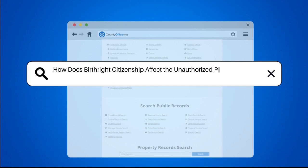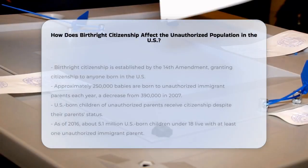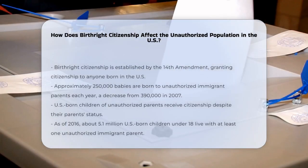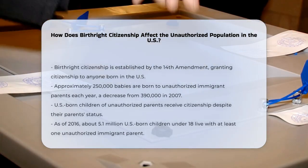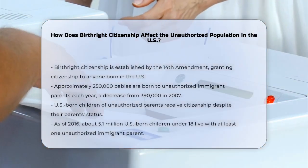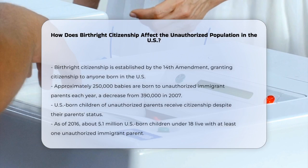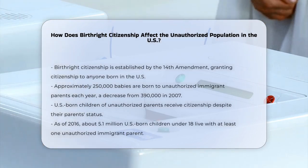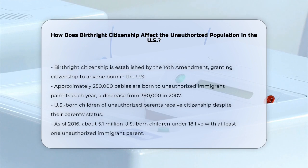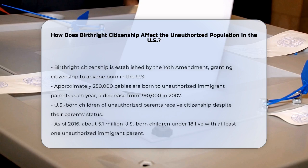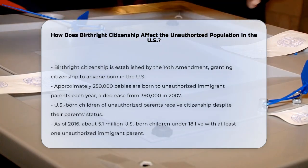How does birthright citizenship affect the unauthorized population in the U.S.? Birthright citizenship, granted by the 14th Amendment to the U.S. Constitution, awards citizenship to anyone born in the United States, regardless of their parents' immigration status. This policy has significant implications for the unauthorized population in the U.S.